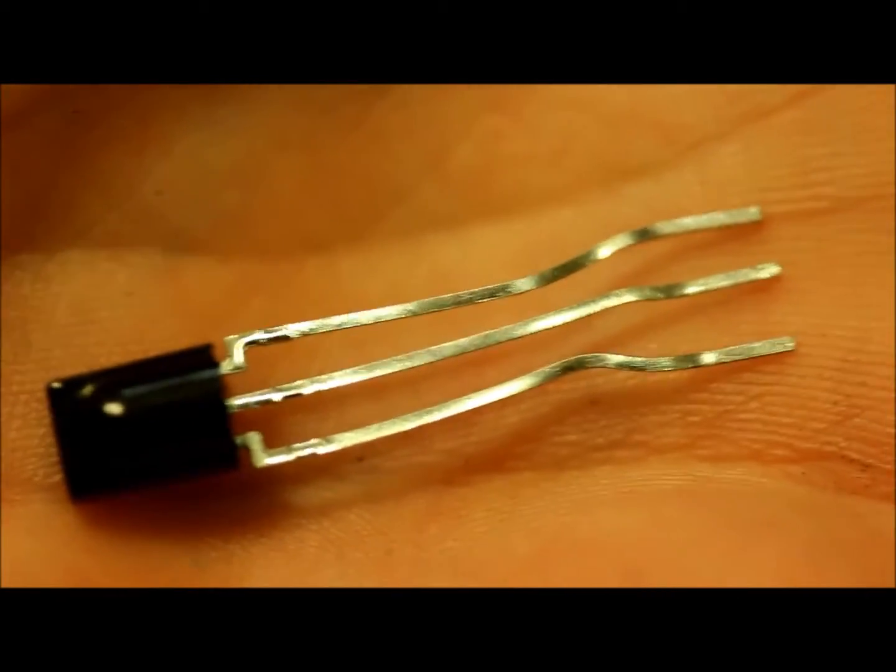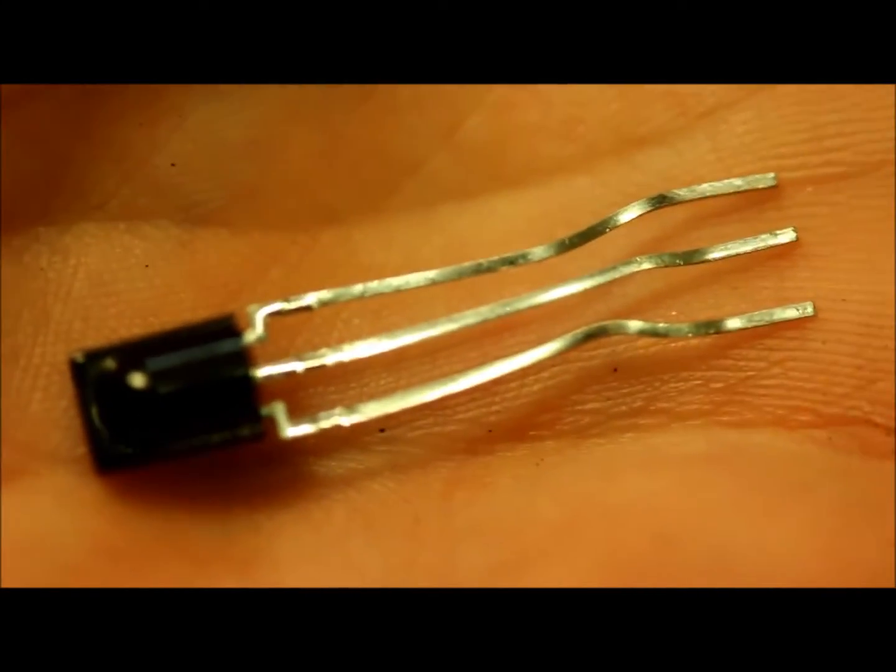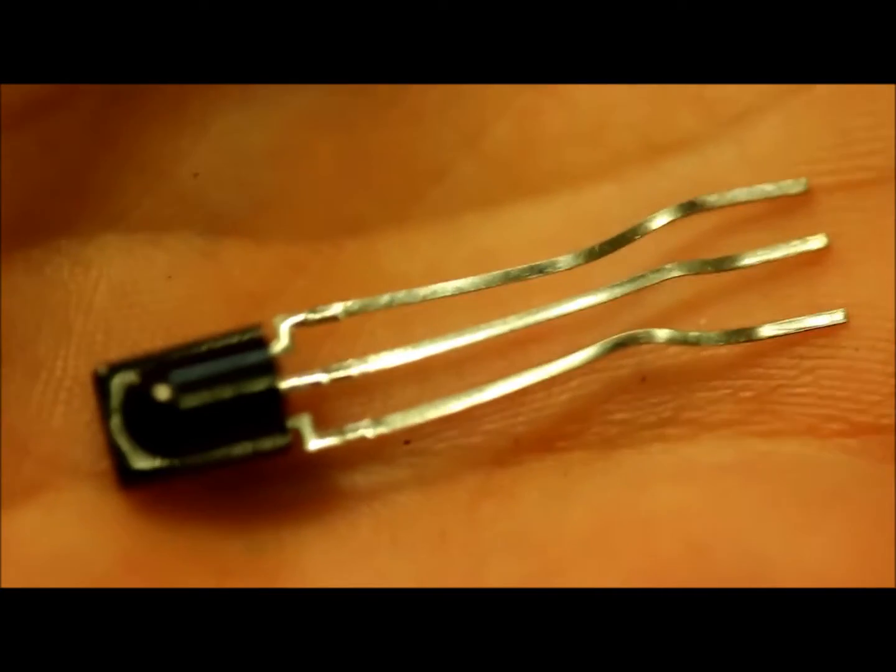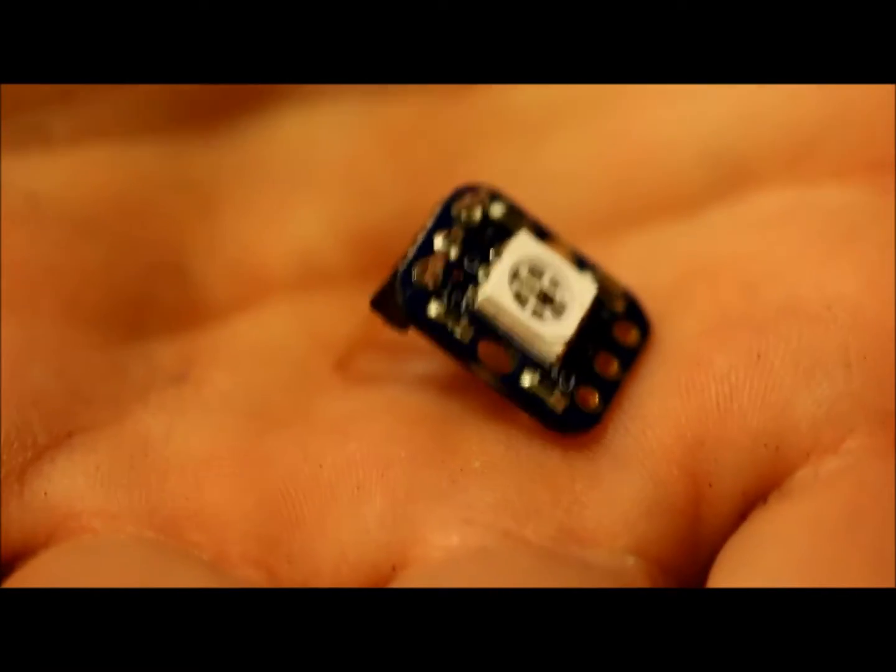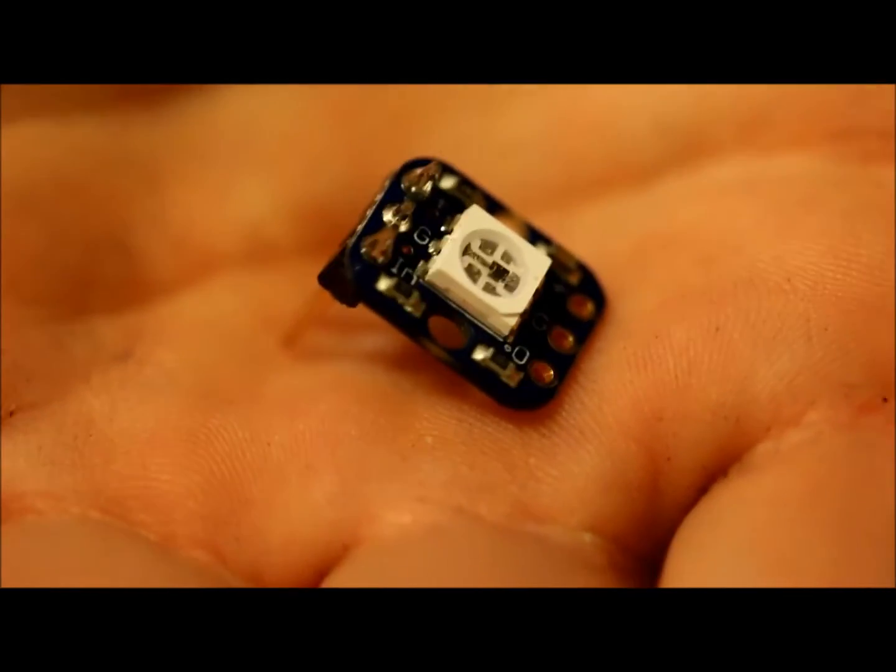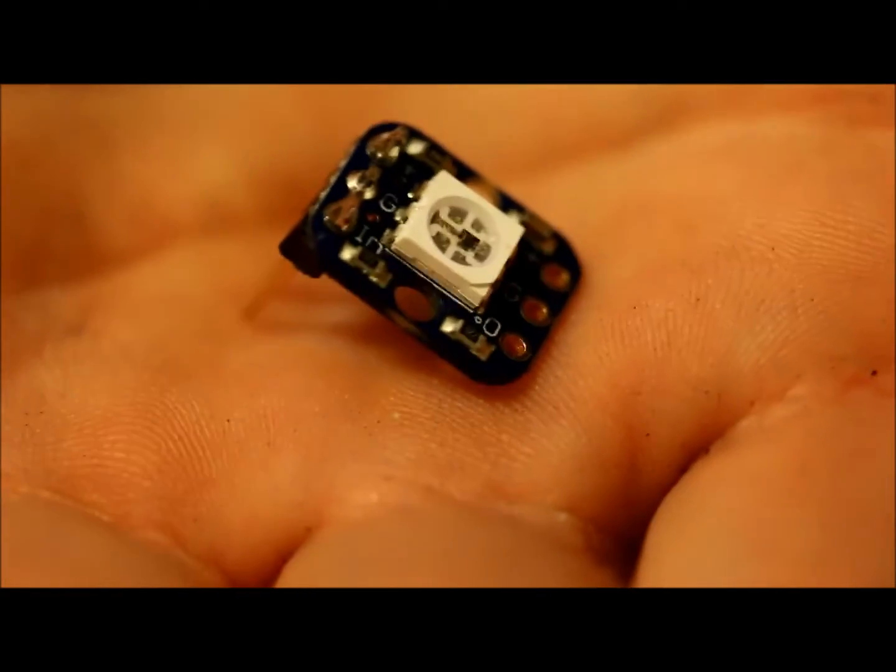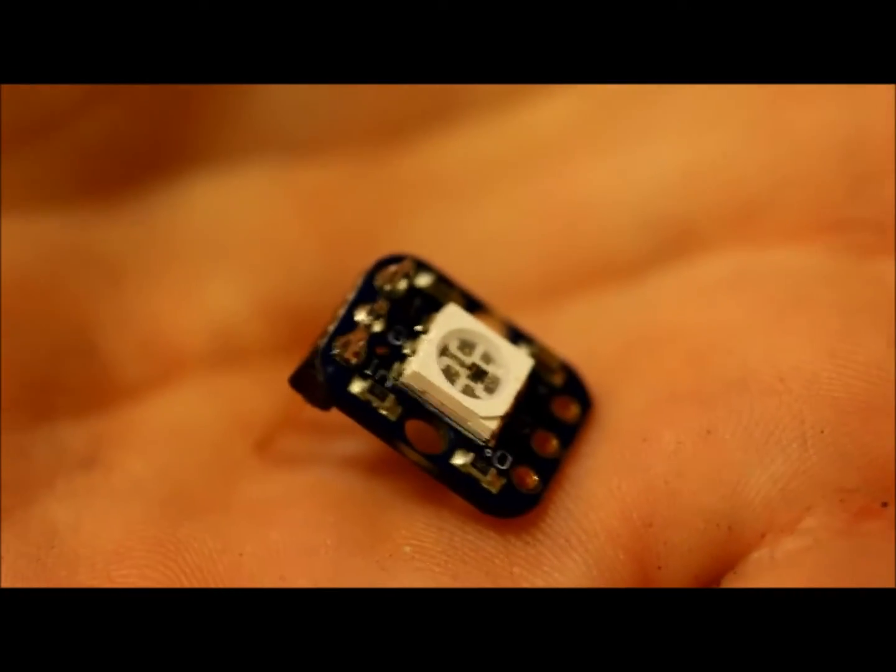This IR sensor will act as our radio station, receiving commands from the remote control. This NeoPixel will change color as an indicator for which direction the robot is moving in. But remember, this is strictly optional, but it's a good suggestion if you want to debug your robot very easily.